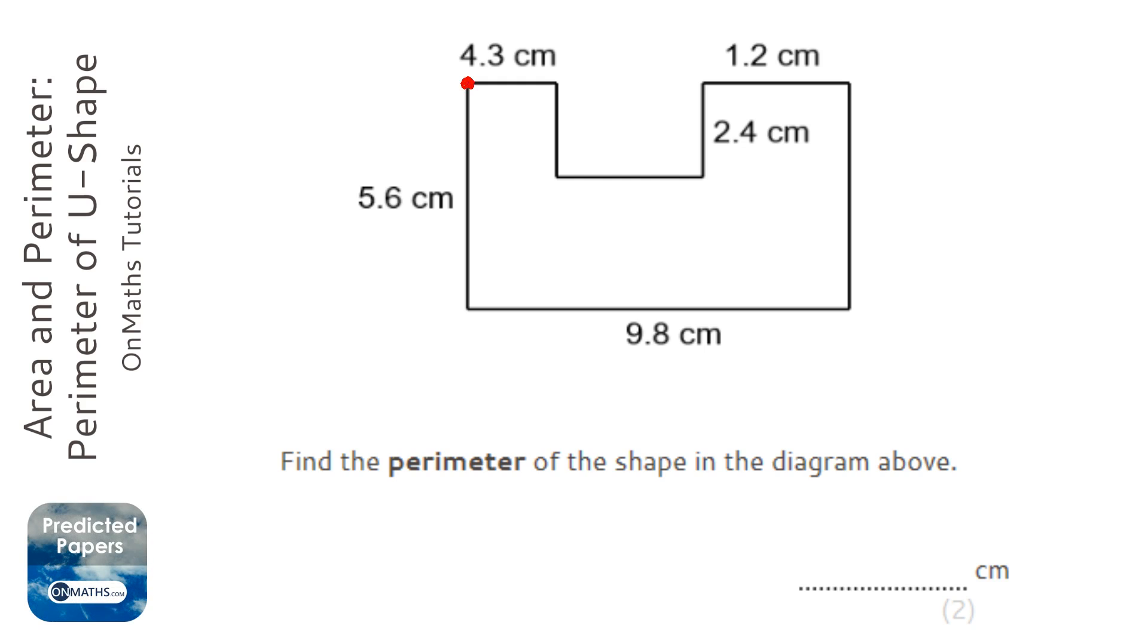So I'm going to start at the top left, and I'm going to just go along here, which is 4.3, so I'm going to write that down, 4.3. Next we need the length here. Now the length here is going to be the same as the 2.4 on the other side, so I'm going to add 2.4.